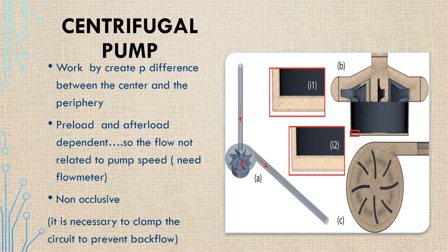The centrifuge pump works by creating a pressure difference between the center and the periphery. It is both preload and afterload dependent, so flow is not solely related to pump speed and it needs a flow meter to measure flow. It is a non-occlusive pump, so when there is pump failure or any problem, it is necessary to clamp the circuit to prevent backward flow.